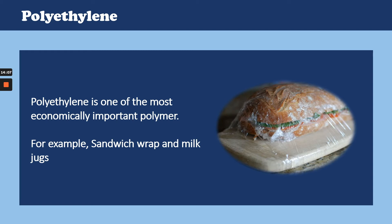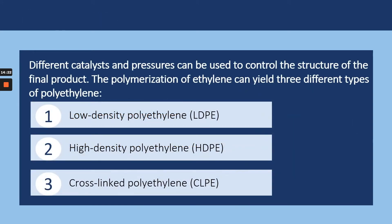From being discovered accidentally, polyethylene has gone on to become a material critical to modern life and is used in films, tubes, plastic parts, packaging and electrical insulation. Different catalysts and different temperature and pressure conditions can be used to synthesize polyethylene, yielding different types of polyethylene products. Polyethylene, belonging to the polyolefin family of polymers, can be classified on the basis of its density and branching as low-density polyethylene, high-density polyethylene and cross-linked polyethylene.